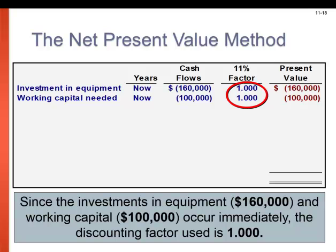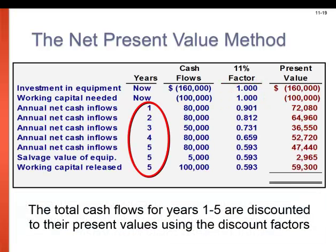Since we're buying the equipment now and the working capital is needed now, we will use the face value of the cash outflows as is — we apply a factor of one, so the present value is the exact same amount. Because one dollar is worth more now than in the future, we have to discount the cash inflows and outflows to their present value. Take a look at the factors being used. If you look in your textbook on page 554, you are given the factor based on the year and the discount rate of 11%.